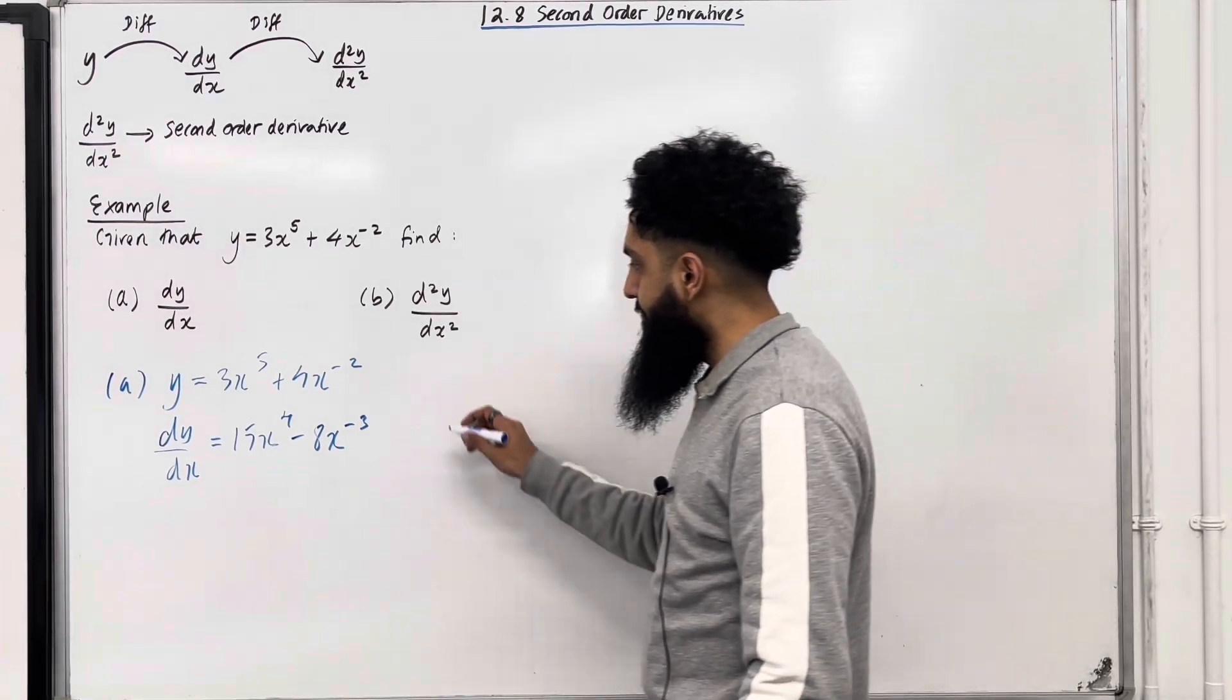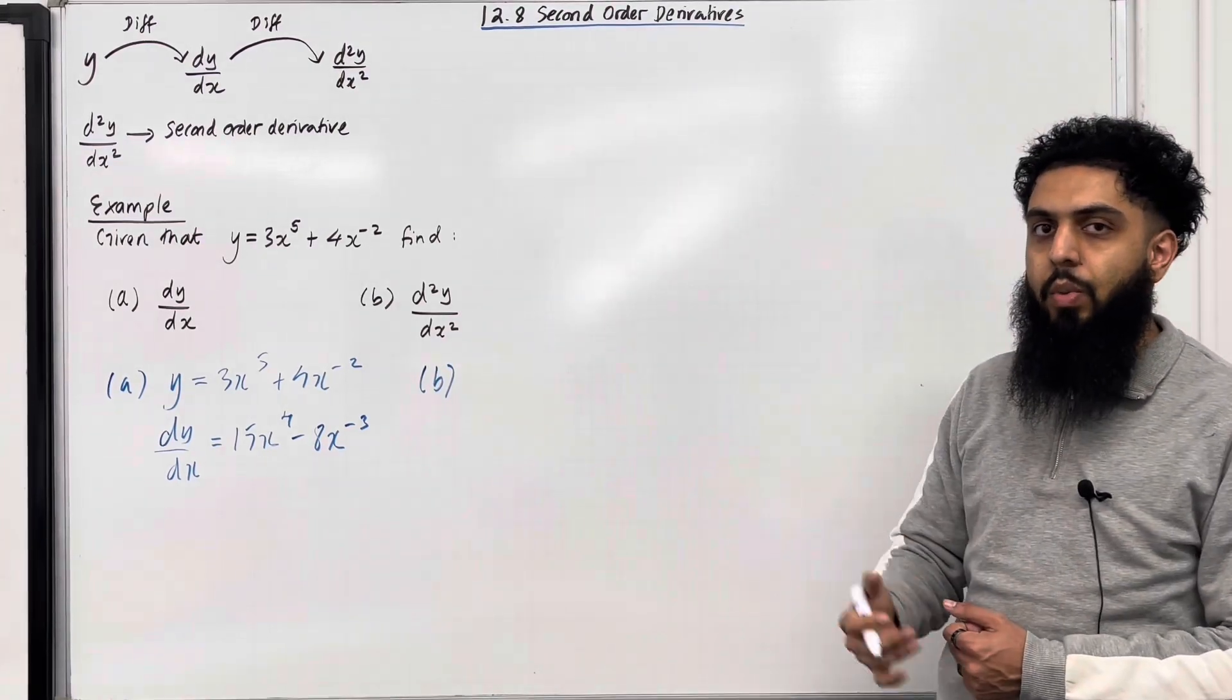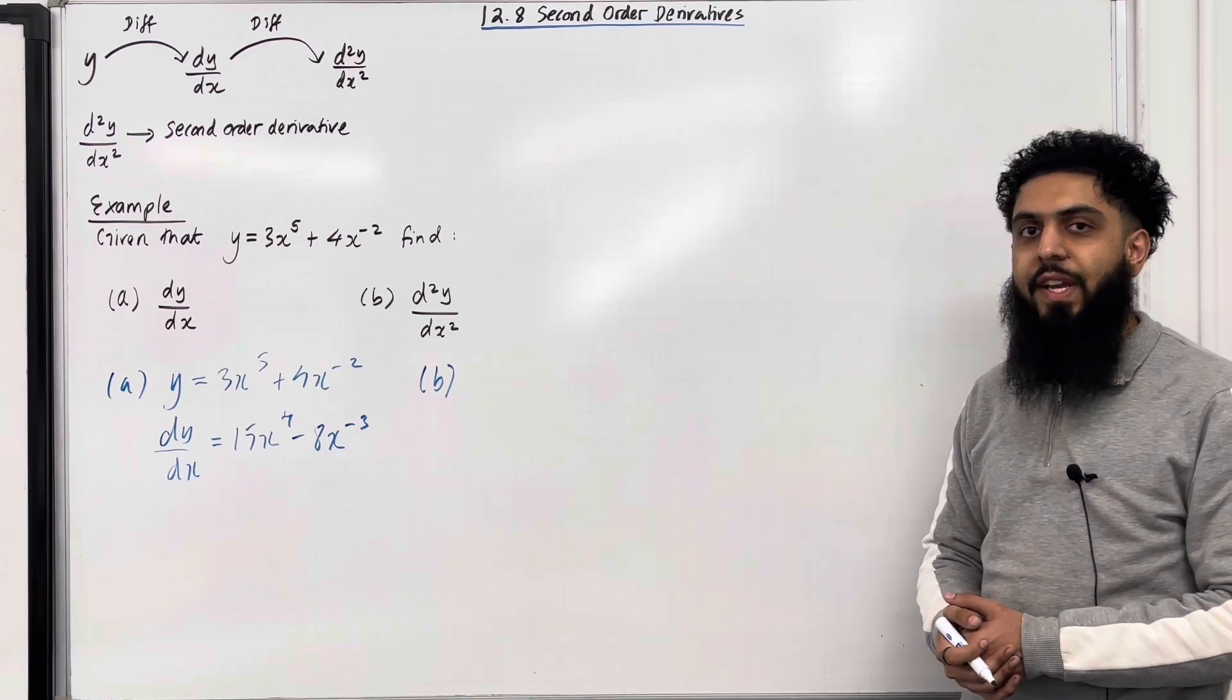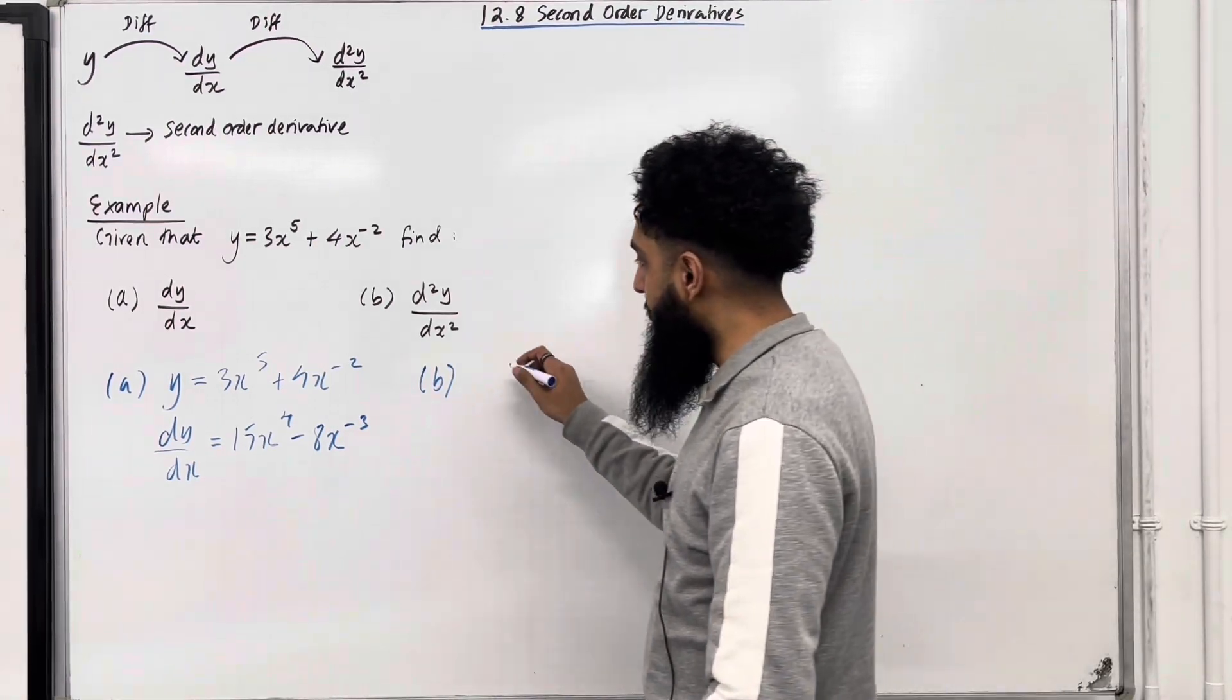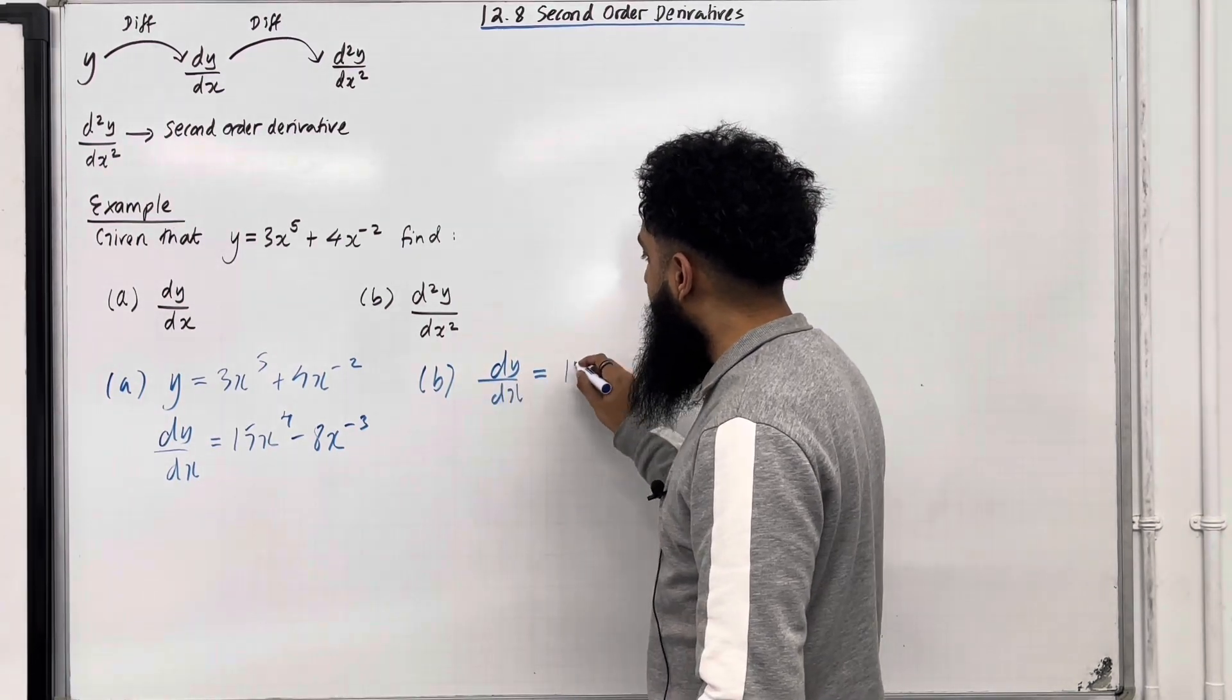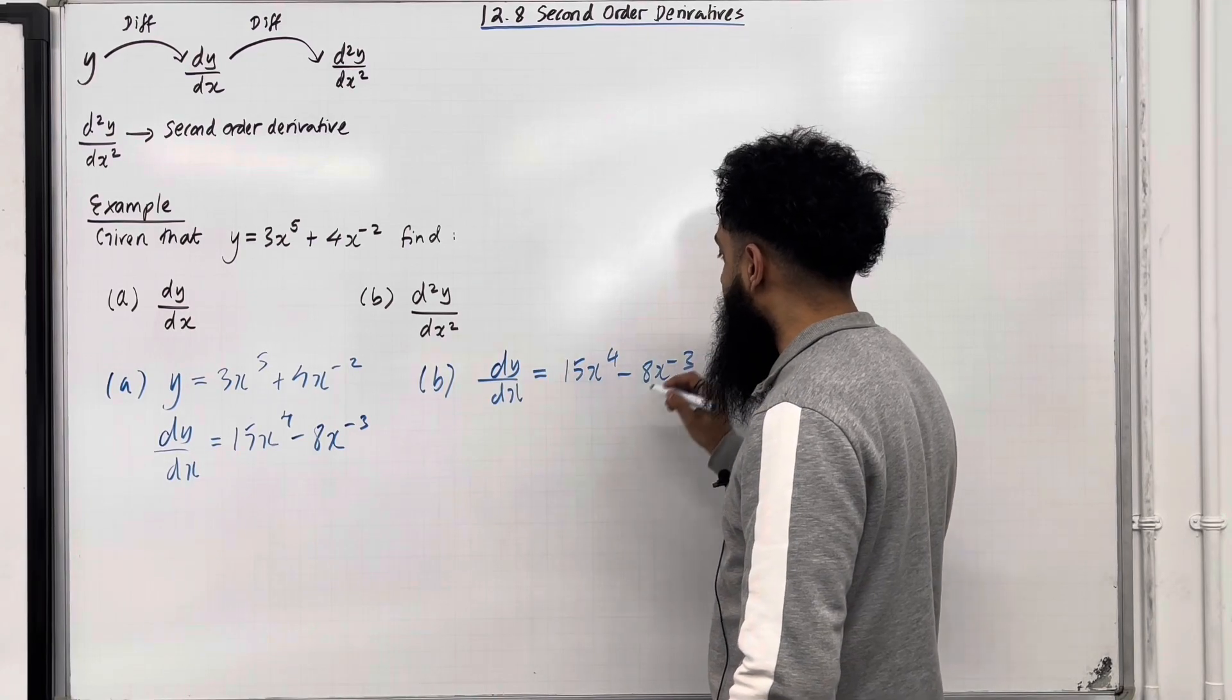Moving on to part B. So in part B, I want to work out d²y over dx². d²y over dx² is called the second order derivative. I must start off with dy over dx. So I've got dy over dx equal 15x to the power 4 minus 8x to the power minus 3.